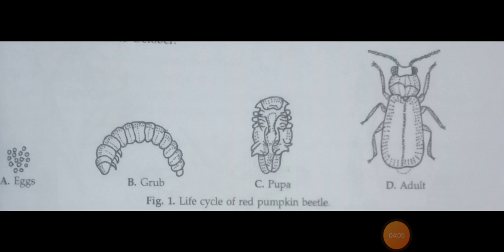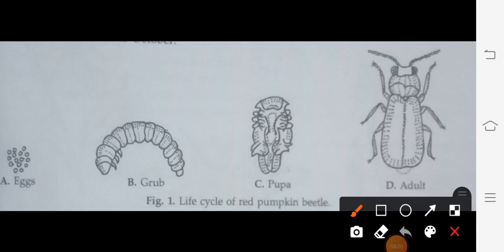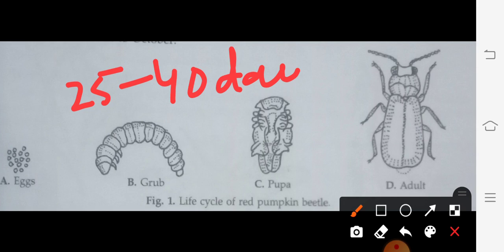We will discuss the life cycle in detail. Red pumpkin beetle life cycle: the life cycle is completed in 25 to 40 days. The life cycle is completed in March to October and this is overlapping five generations recorded from March to October.